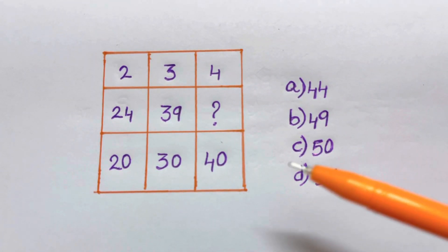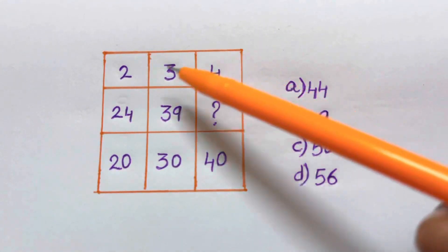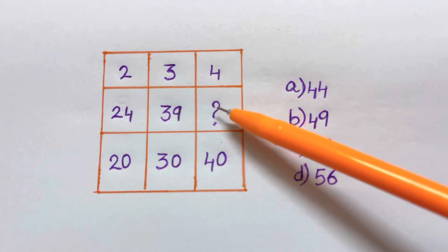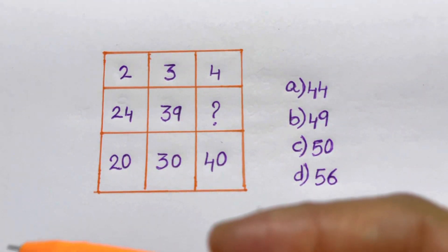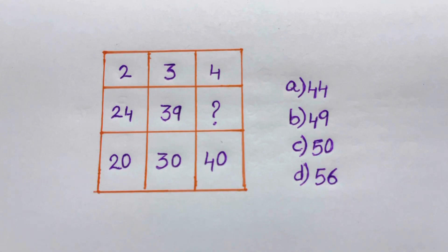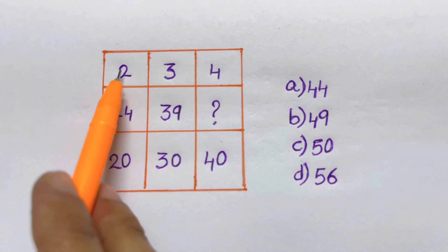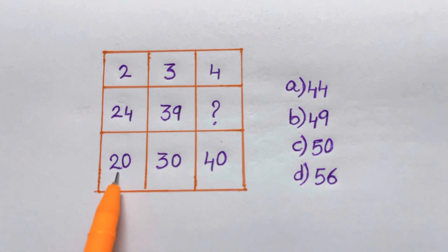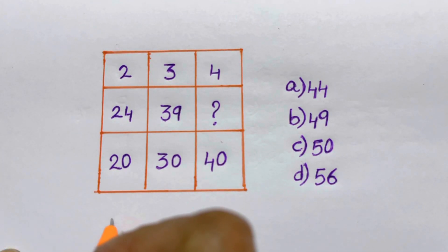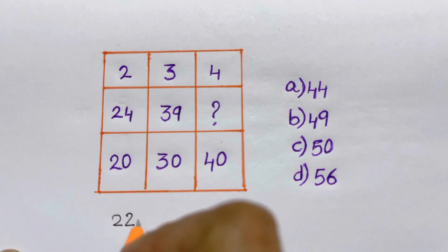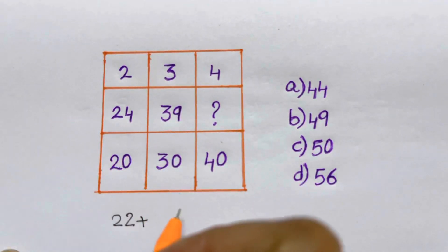So here we have 2, 3, 4. How are they connected with this and how are we going to find out the missing number? So what I'm going to do is take 2 and 20. I'll add 20 plus 2, that will give me 22. And what am I going to add to get 24? I think it's just 2, so I'll get 24.